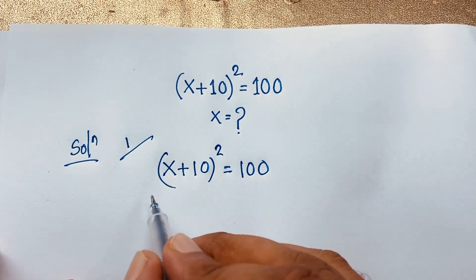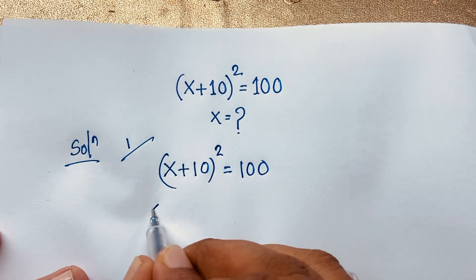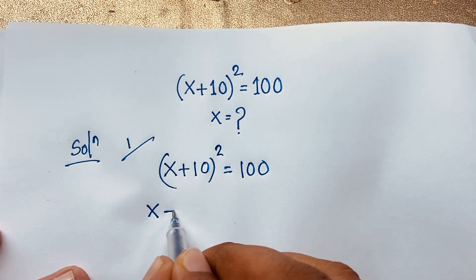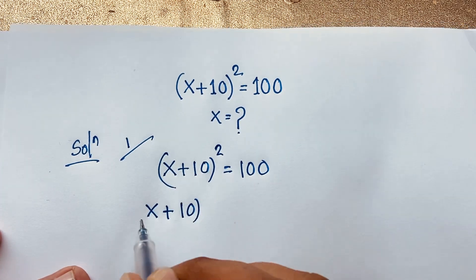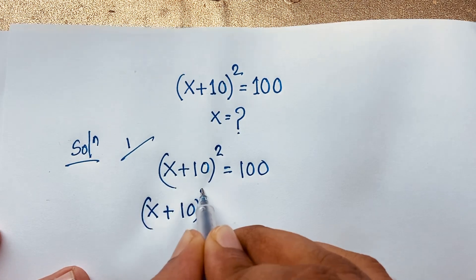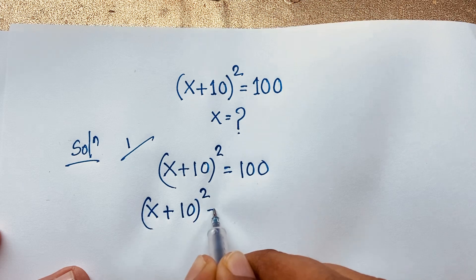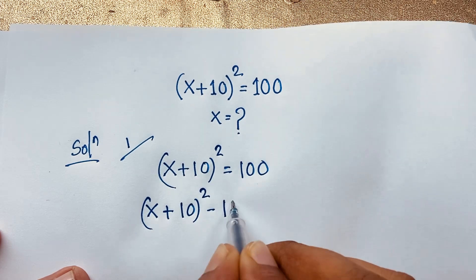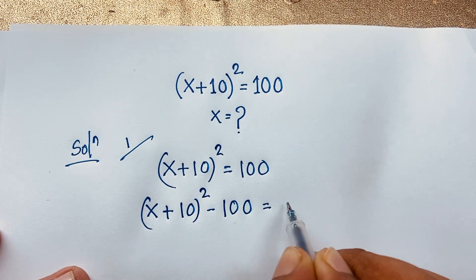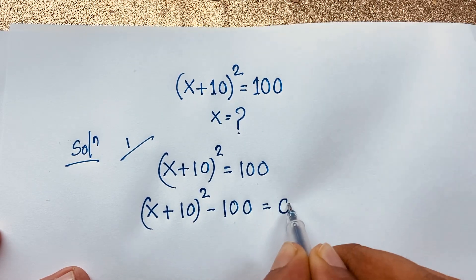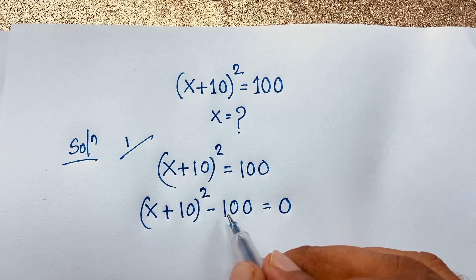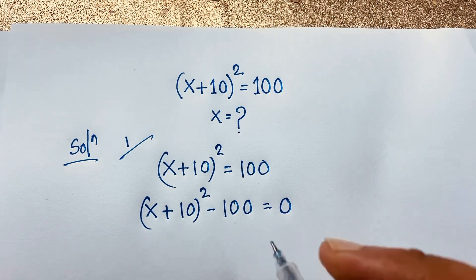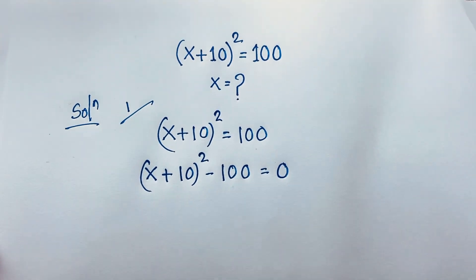First of all, I can see that it will be (x + 10)² − 100 = 0. I just move this 100 to this side, so it will be negative 100.